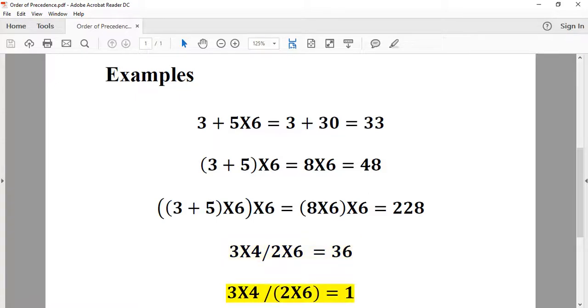3 times 4 over 2 times 6 inside parentheses. First finish the parentheses: 2 times 6 equals 12, then 3 times 4 equals 12, 12 over 12 equals 1.